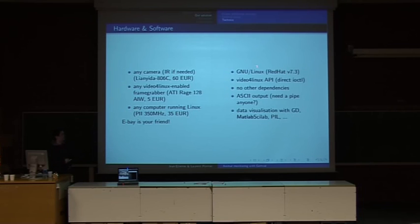On the software side you use GNU Linux. We use a rather old version of Red Hat, version 7.3. Of course the Video for Linux API. We have no other dependencies. We have an output in ASCII, so you can throw your data anywhere, even in a file if you want. And then you can visualize your data with GD, Scilab, Python Imaging Library, name your favorite software.